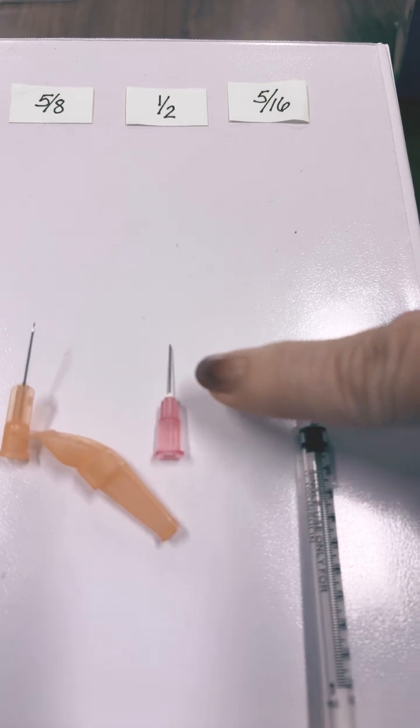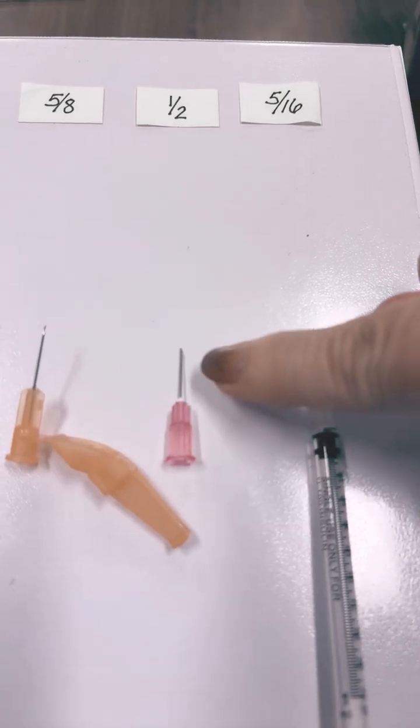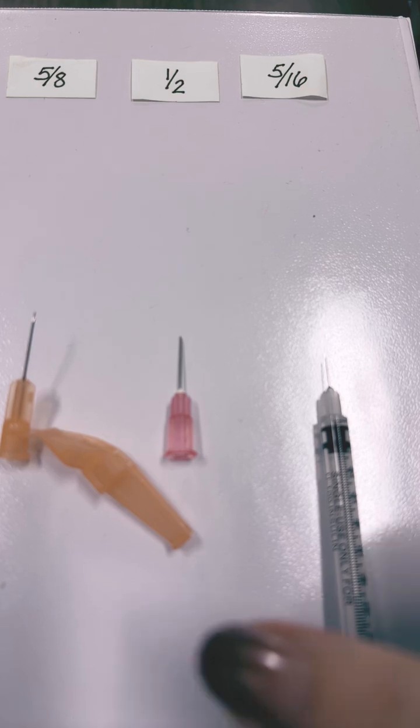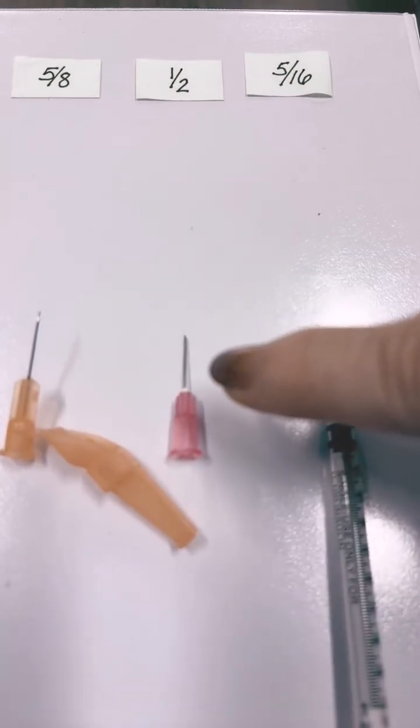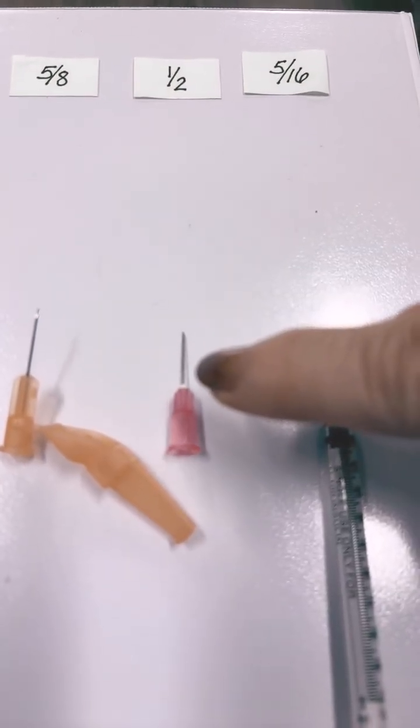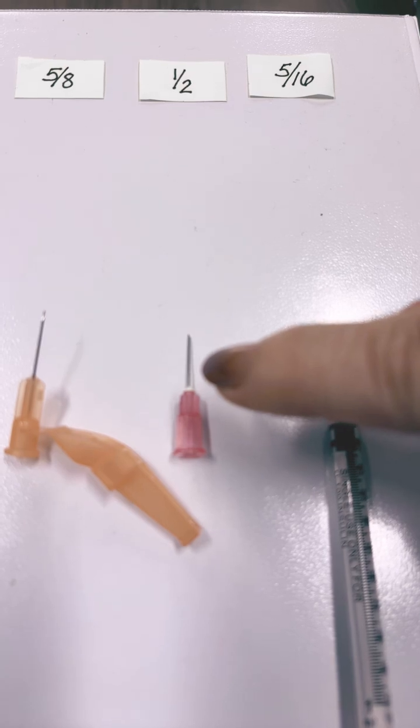Then we move to the 1/2 inch. This one can be used for sub-Q, also intramuscular probably on pediatrics or small babies.